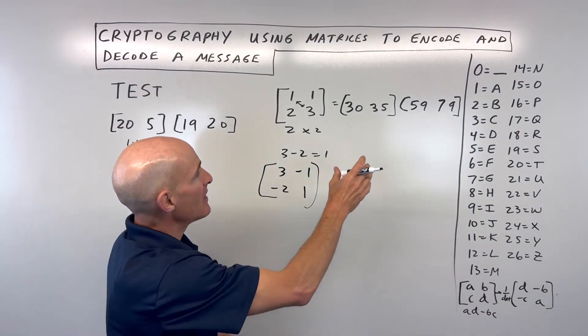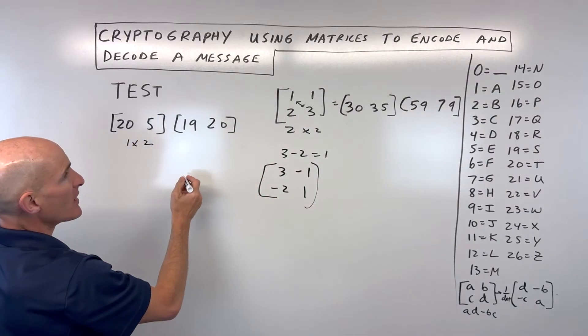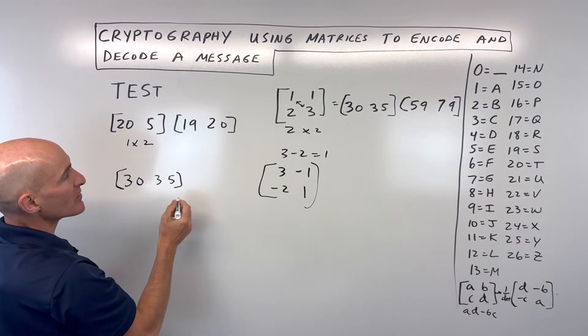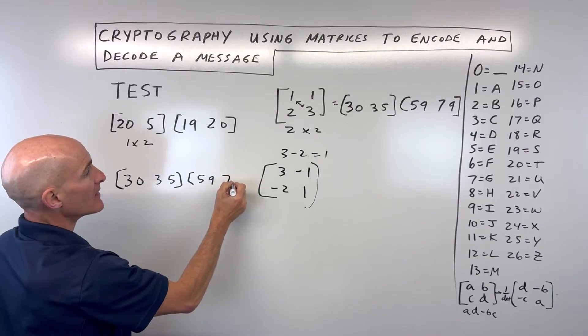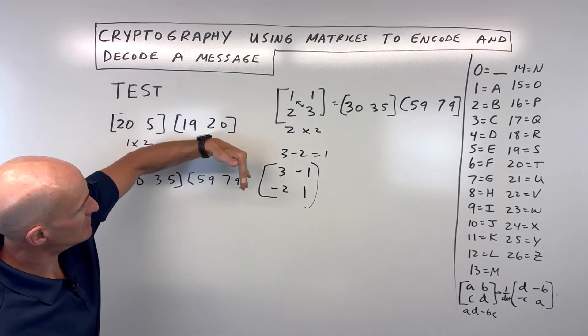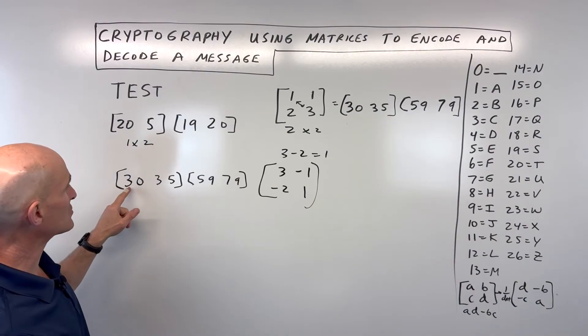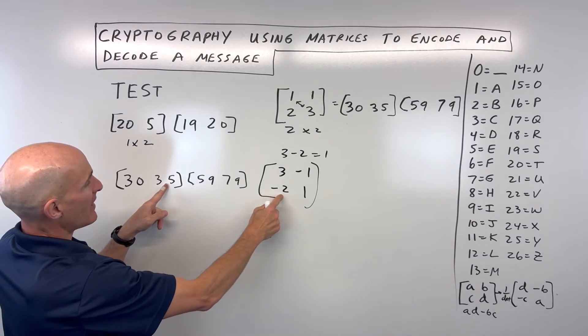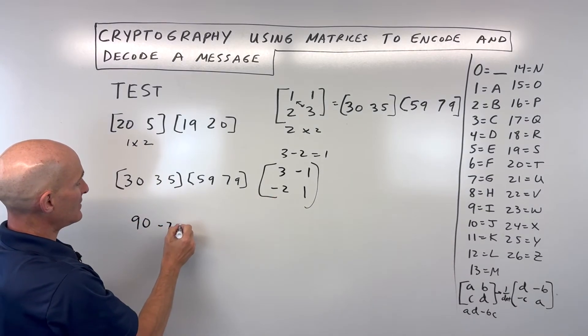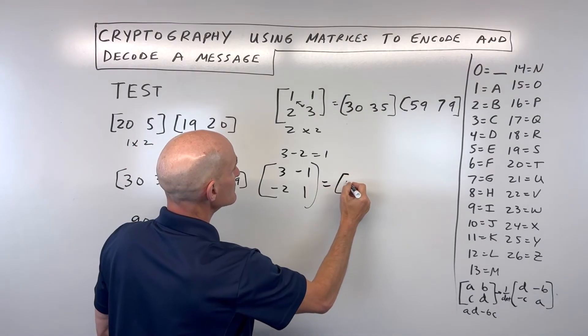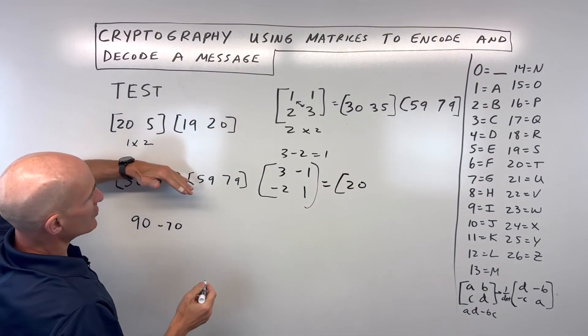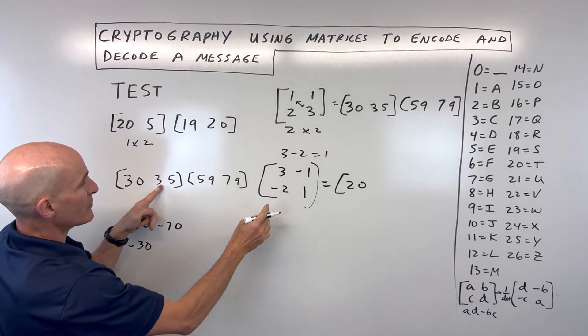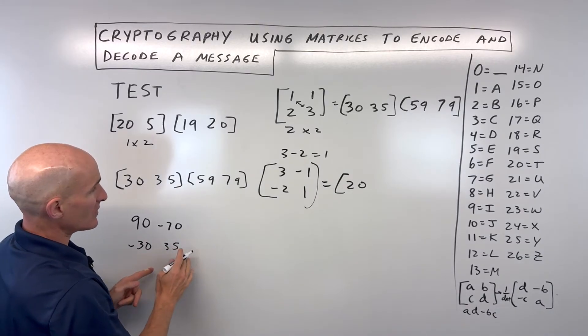So now we're going to take these guys right here, and we're going to multiply it by this decoding matrix. So 30, 35, and we also have 59 and 79. Let's start with this matrix multiplied by our decoding matrix. So 30 times 3, I'm just going to write this down, that's 90. 35 times negative 2 is negative 70. If we add that together, we get 20. And then if we take this row times the second column, we've got 30 times negative 1 is negative 30, 35 times 1 is 35. We add those together, we get 5.